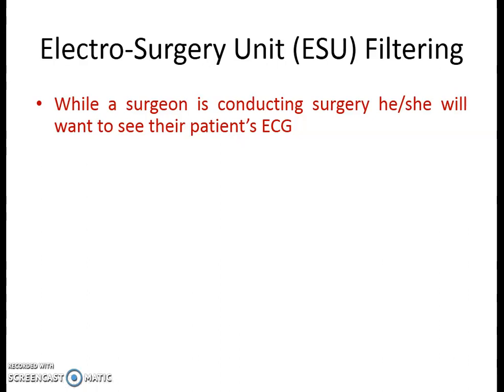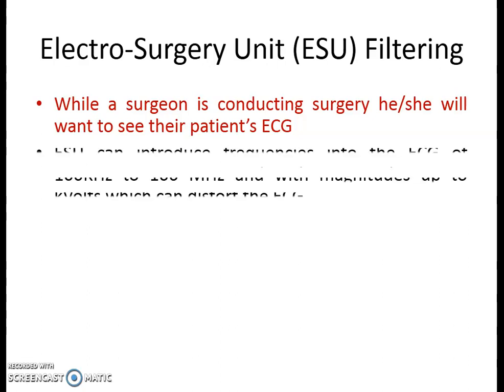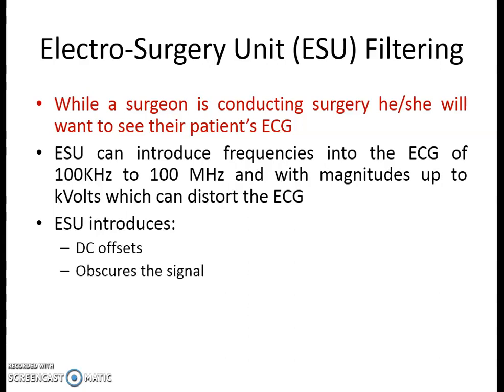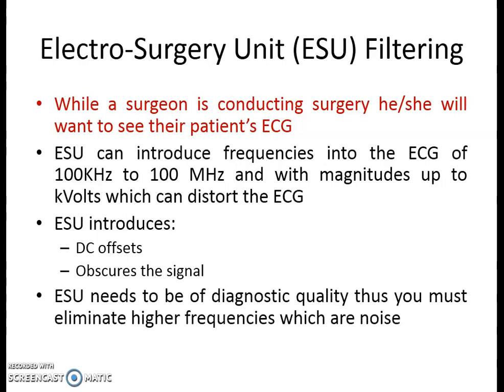Regarding ESU filtering: while the surgeon is conducting surgery, he or she will want to see the patient's ECG. The ESU (Electrosurgical Unit) is a machine generally used for cutting and coagulation with a high frequency signal in the range of hundreds of kilohertz up to several megahertz, with a magnitude in terms of kilovolts. So this signal can also distort the ECG. The ESU can introduce two types of error: it can introduce a DC offset, or it can completely obscure the ECG signal. So the ESU needs to be of diagnostic quality.